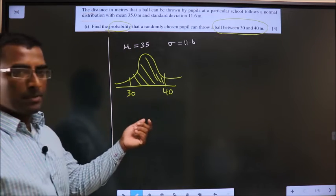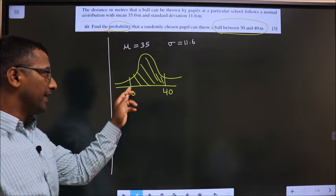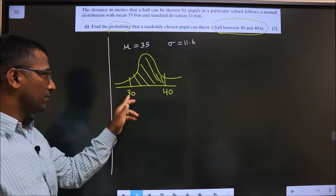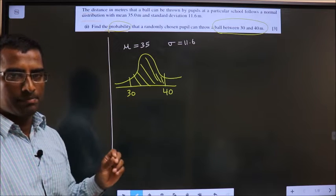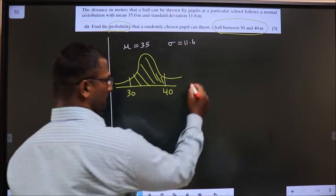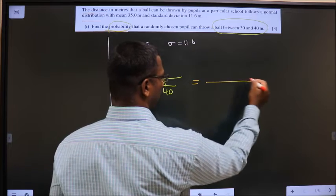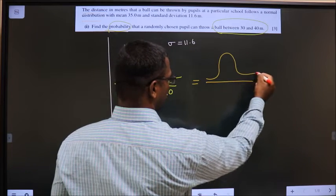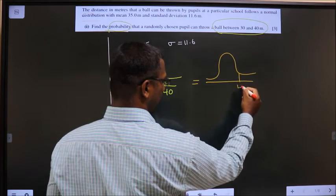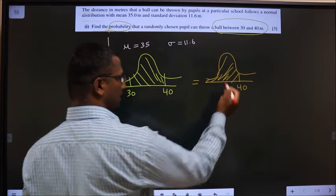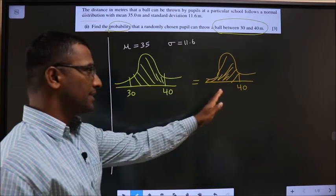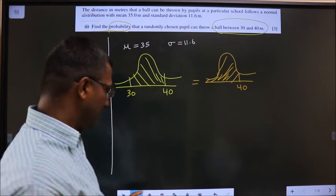Probability is nothing but area under the curve. So you need area under the curve from 30 to 40. Now, how do we find it means, I will find out the entire area that is less than 40. Understand this, if I find less than 40, this entire area I will get.